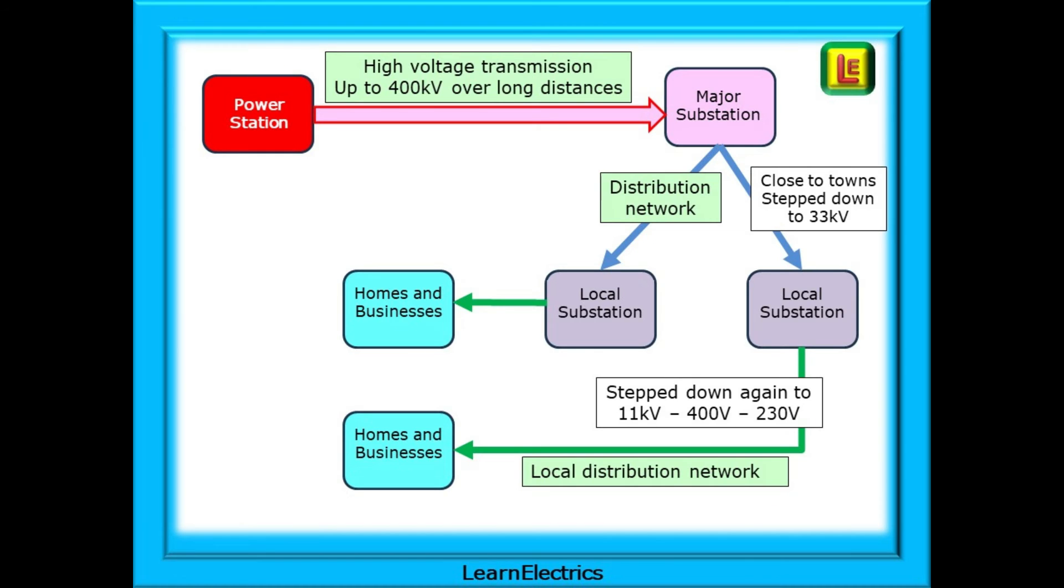This is the basics of how it works then. The power station outputs electricity and this is stepped up to 400,000 volts for transmission over long distances, many, many miles. At various points at major substations, the voltage is stepped down to around 33,000 volts and then distributed to local substations. There may be one in a small village, several in a town, and hundreds of local substations in big cities. The voltage is stepped down and distributed to homes and businesses in the local area as a usable 230 volts or 400 volts.